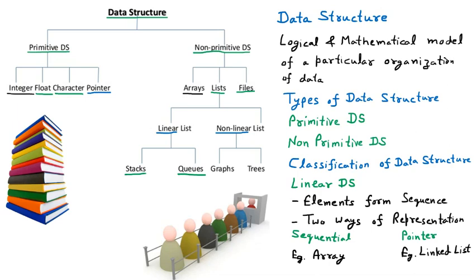We are discussing the difference between stack and queue. The stack is a LIFO data structure — LIFO means last in first out. The queue is a FIFO data structure — first in first out. Both stack and queue are part of the linear data structure, meaning they operate on elements arranged in a line.